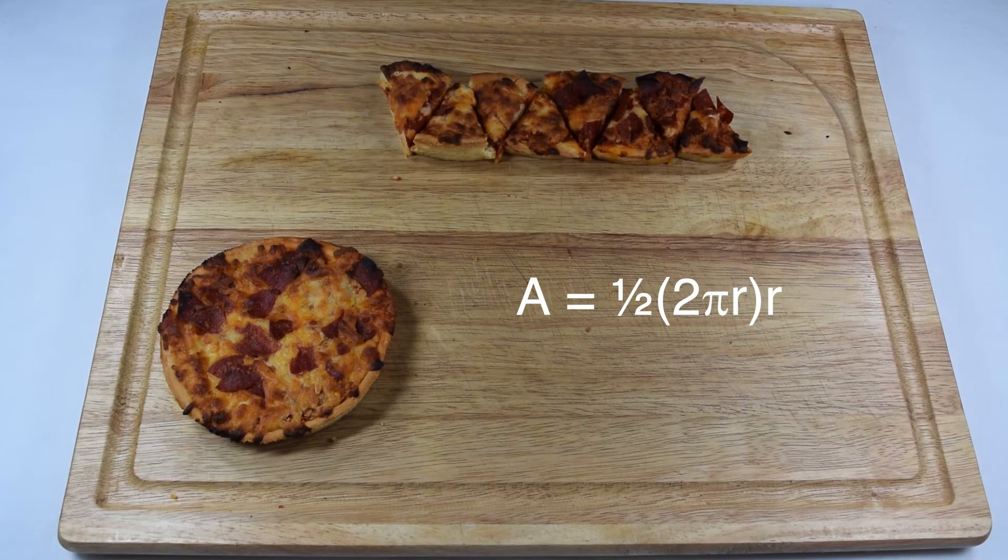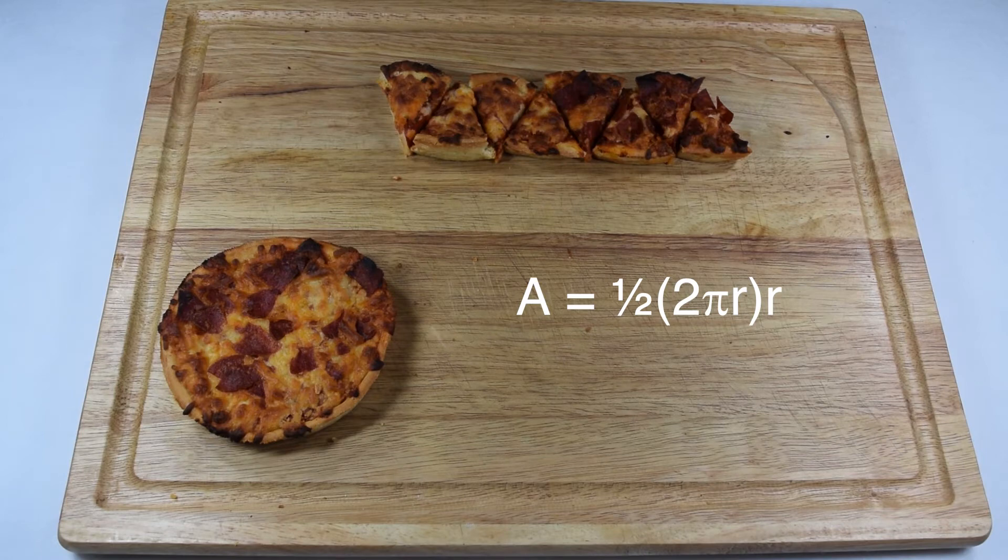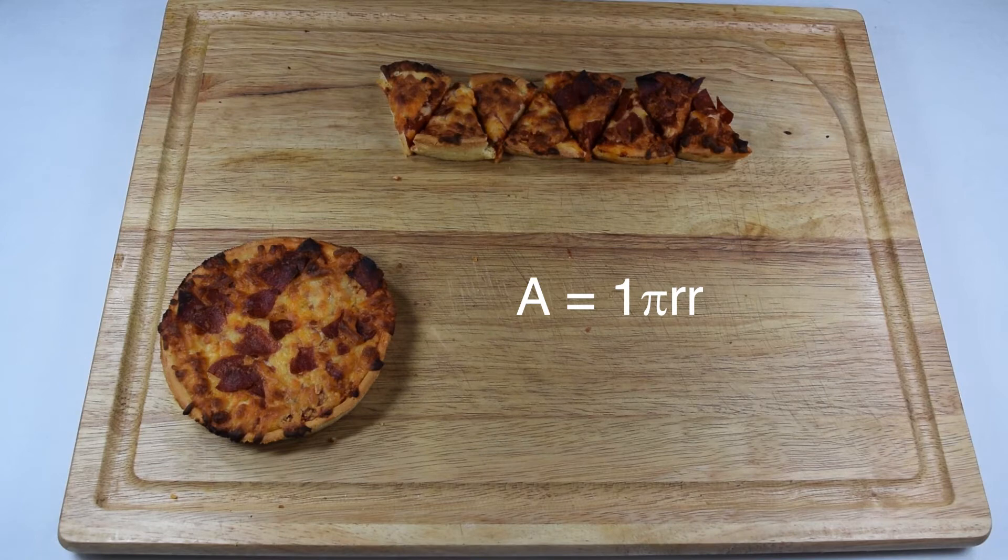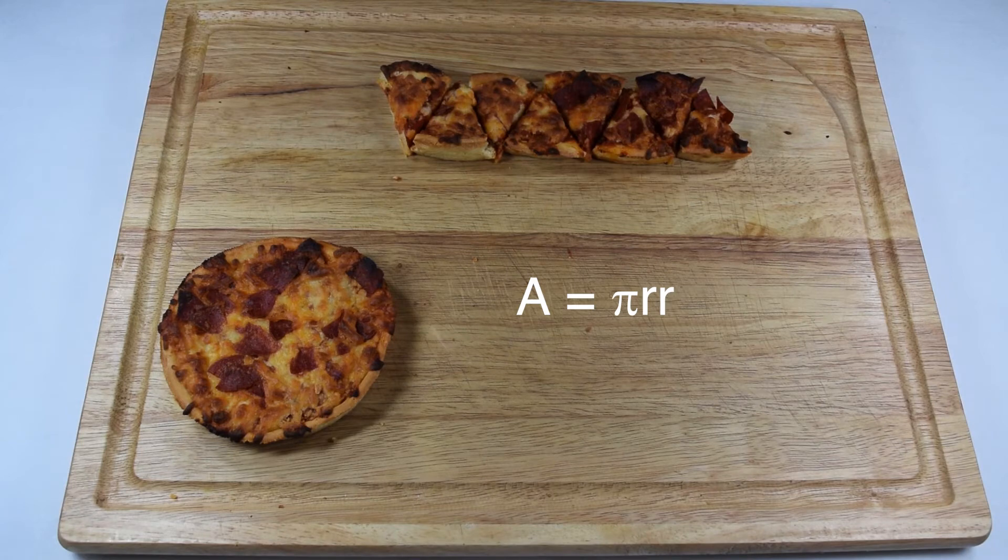We need to do some simplifying. Let's start by multiplying one-half times 2. One-half times 2 gives us 1, which brings us to area is 1 times pi times radius times radius. We don't need to keep a coefficient of 1, so let's go ahead and drop it. That brings us down to area is pi times radius times radius.